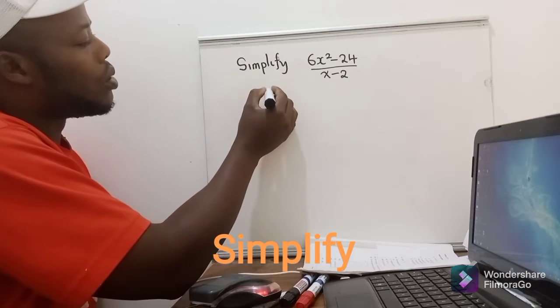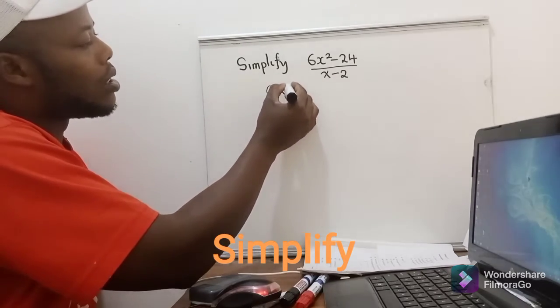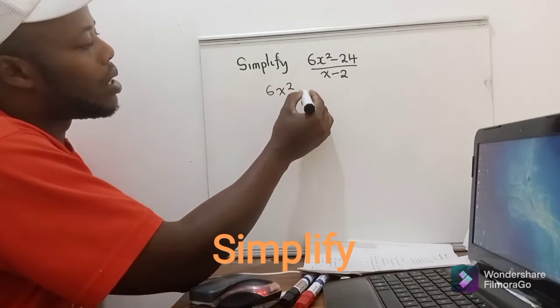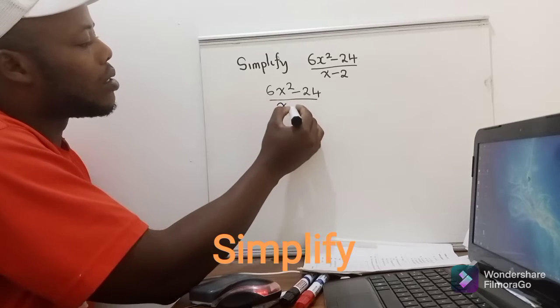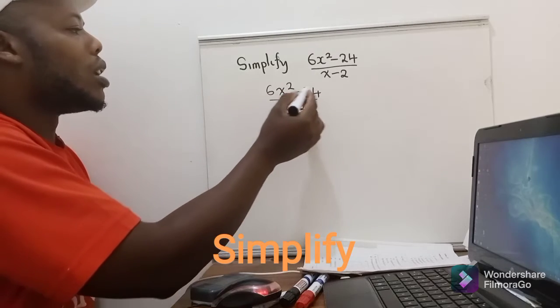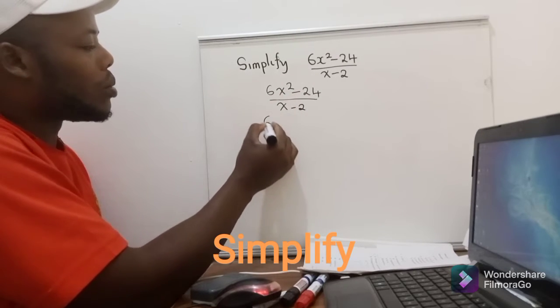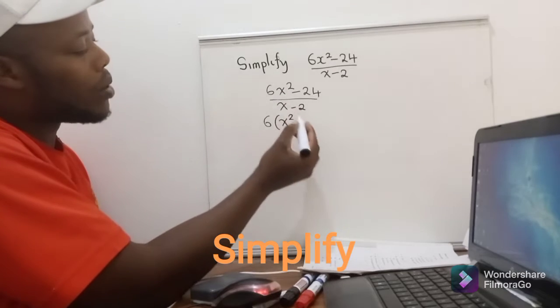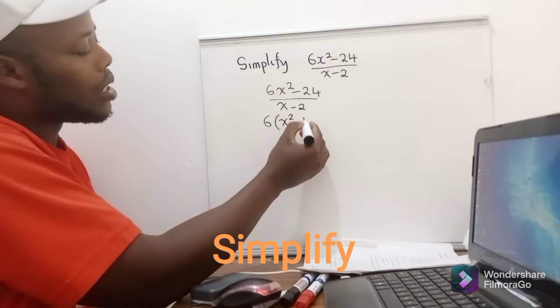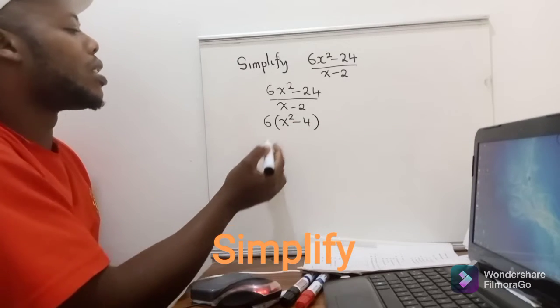We get 6x² minus 24 over x minus 2. So now you factor out what is common. Here 6 is common, so 6 can come outside the brackets and you remain with something like this.